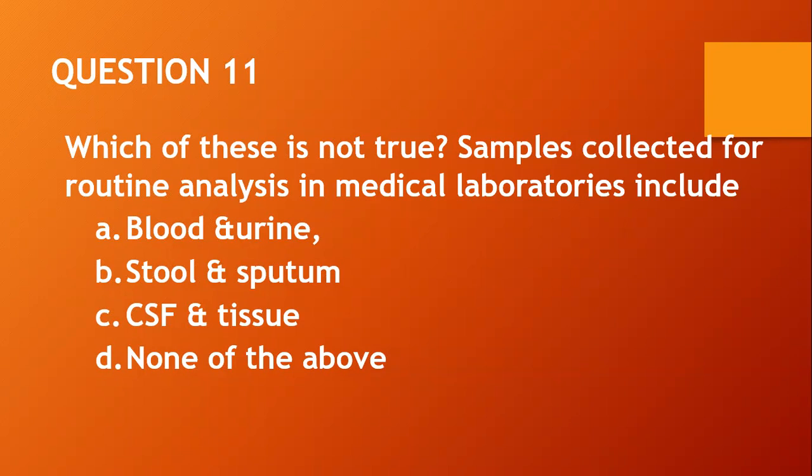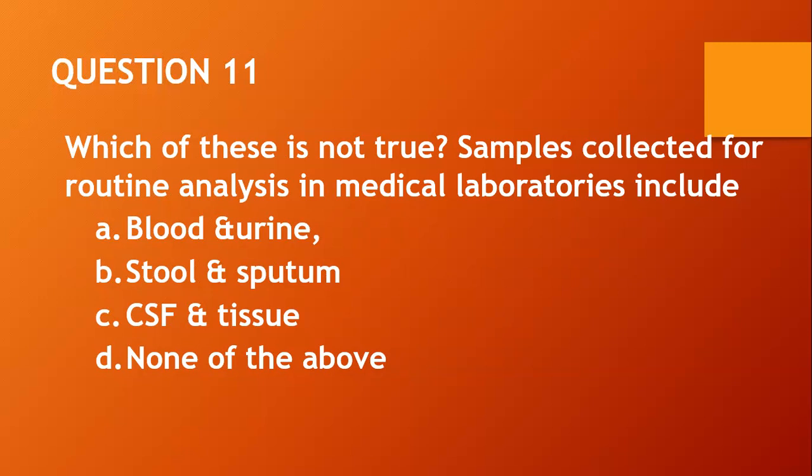Question eleven: Which of these is NOT true? Samples collected for routine analysis in medical laboratories include: A, blood and urine; B, stool and sputum; C, CSF and tissue; D, none of the above. In fact, every one of these is a sample collected in the lab. So I will go with D, none of the above.